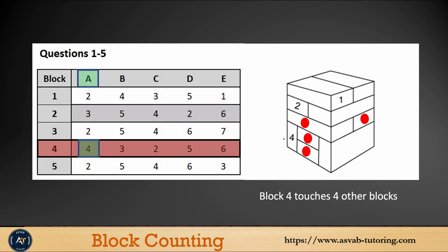Next is number four. Same way, make sure that you look at the block straight to the number. On the top side, you have one and this one is two. On the right side, you have one and two. There are four blocks touching block number four.